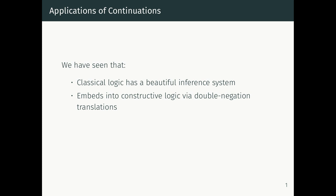This is actually quite a surprise, because normally we think of constructive or intuitionistic logic as a restriction of classical logic — you take away double negation elimination. But what we've seen here is that the other way around is true too. We can think about classical logic as a subsystem of constructive logic, and that's what the double negation translation does. Once we have this translation, constructive logic is constructive, so we get an operational interpretation for classical logic. Just as every constructive proof corresponds to a functional program, so does every classical proof.